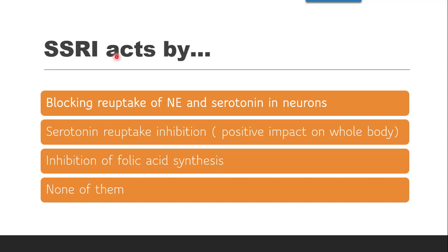Next question: SSRI acts by — blocking reuptake of norepinephrine and serotonin, serotonin reuptake inhibition, inhibition of folic acid synthesis, or none of them? SSRI, as the name Selective Serotonin Reuptake Inhibitor suggests, acts by serotonin reuptake inhibition. Serotonin, instead of showing its action, is reuptaken by the presynaptic neuron — that is the reuptake mechanism — and that reuptake is inhibited so serotonin can occupy the receptor sites and show its action. Serotonin has a positive impact on the body and is responsible for feelings, mood, hunger, etc.